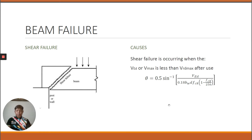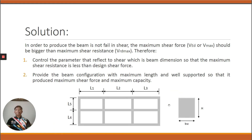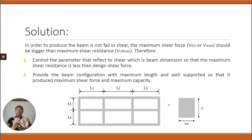When the section has insufficient shear capacity, we need solutions. To ensure the beam does not fail in shear, VEd should be bigger than VRd,max. The first solution is to control the parameters that affect shear — specifically the beam dimensions BW and H — so that the maximum shear resistance is sufficient relative to the design shear force.